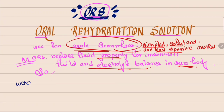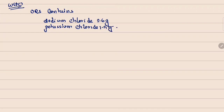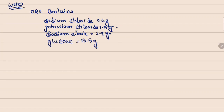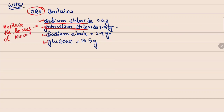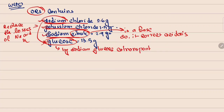According to WHO, ORS contains: sodium chloride 2.6 g, potassium chloride 1.5 g, sodium citrate 2.9 g, and glucose 13.5 g. Sodium chloride and potassium chloride replace the losses of sodium and potassium. Sodium citrate is a base, so it corrects acidosis. Sodium is transported along with glucose by the sodium-glucose co-transporter in the ileum.